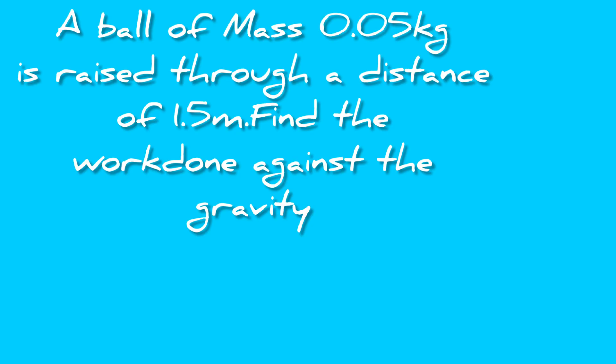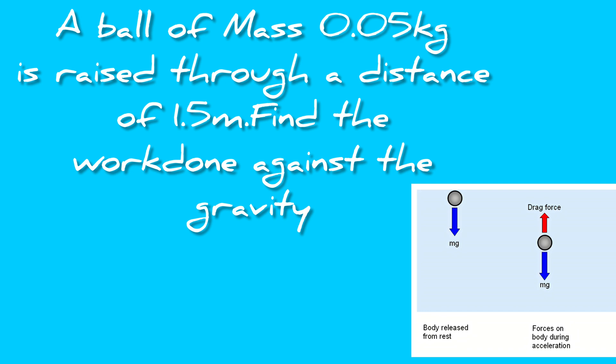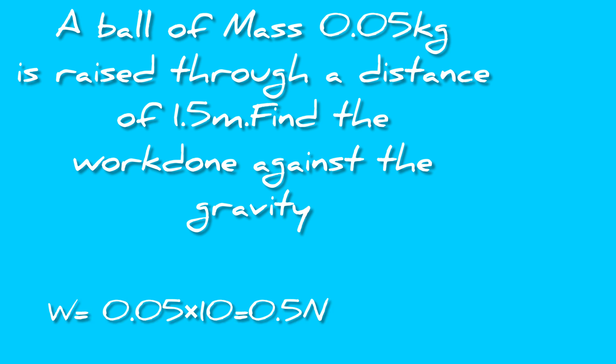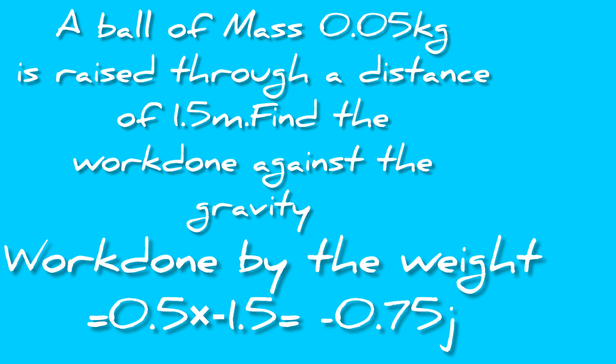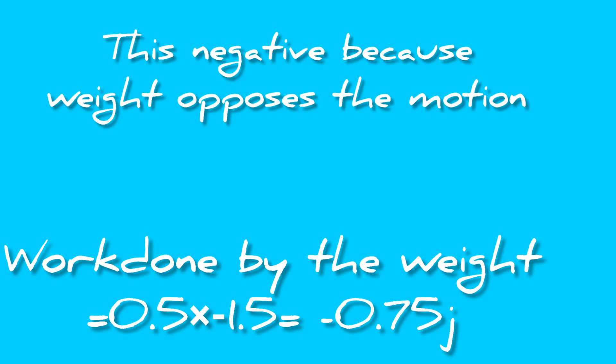In this question, we have to find the work done against gravity. There will be other forces acting to raise the ball, but we are only asked about the work done against gravity, which is due to weight. Weight = 0.05 × 10 = 0.5 N. Work done by the weight = 0.5 × (−1.5) = −0.75 J. This is negative because weight opposes the motion — this is an example of negative work done.